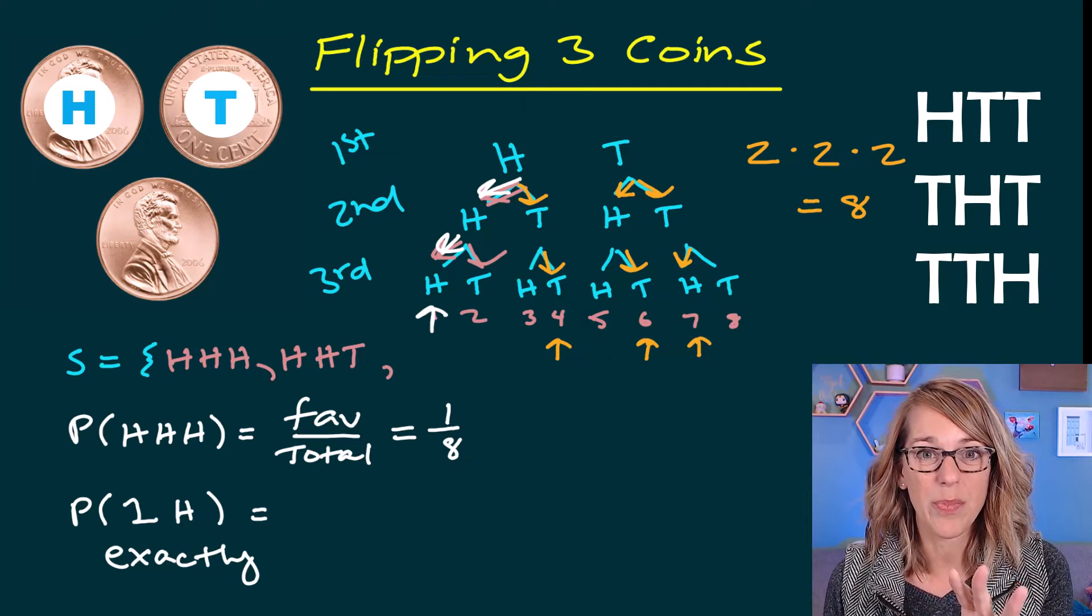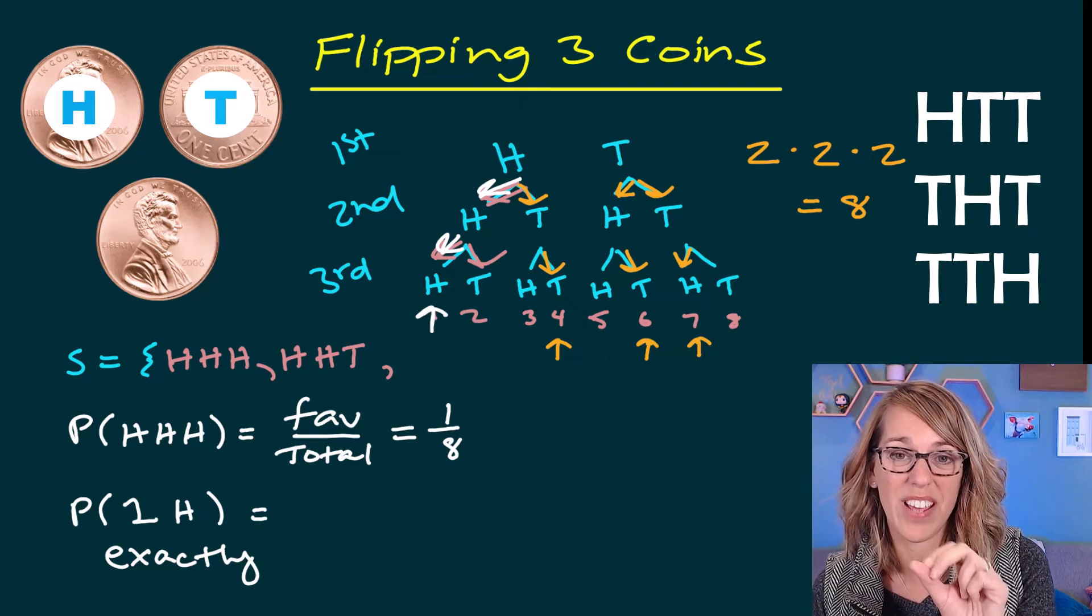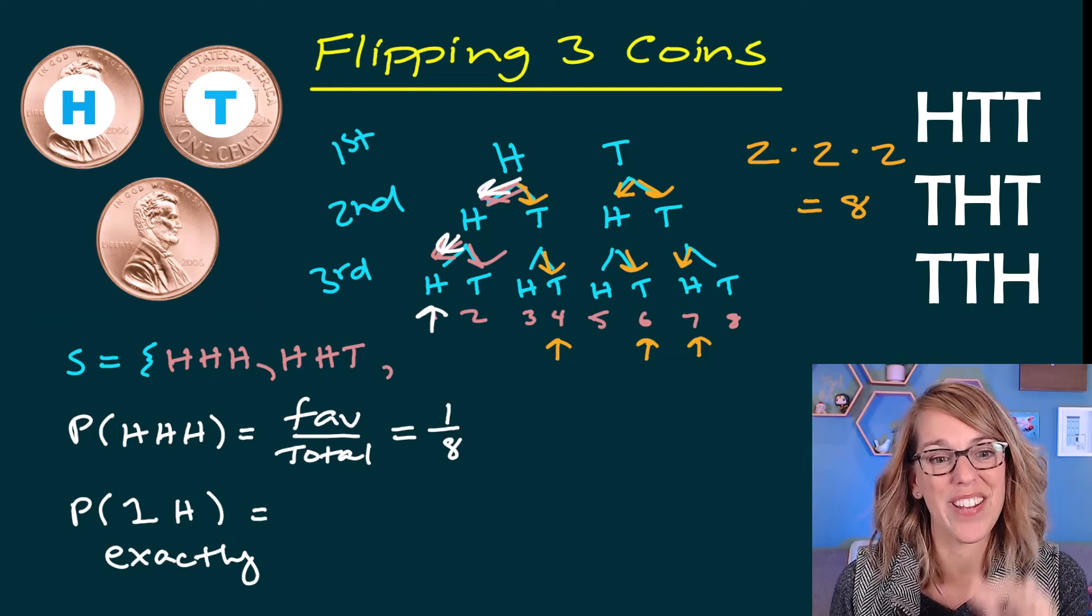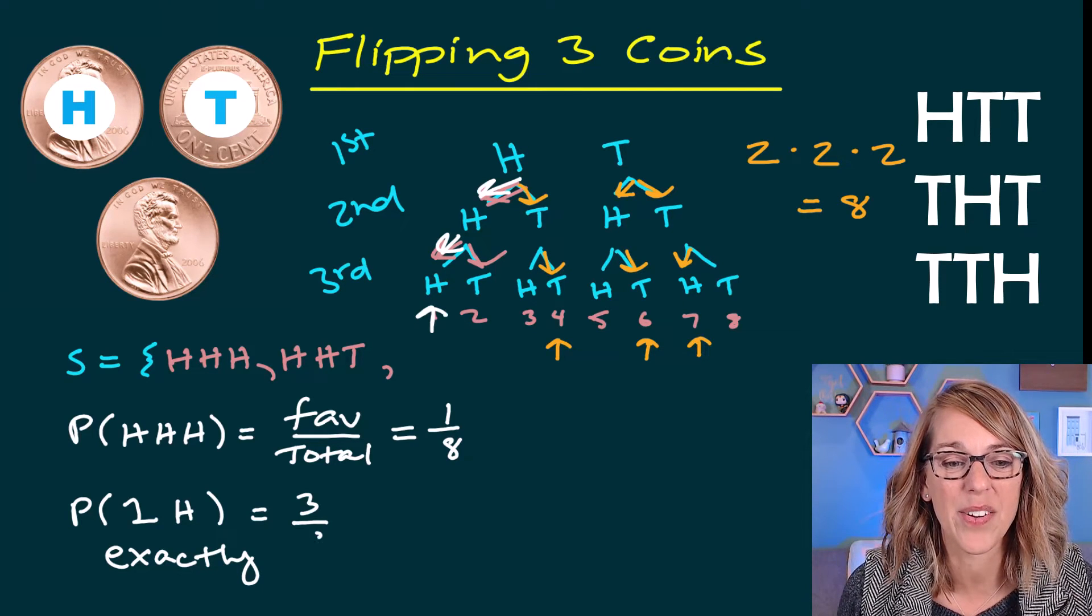You could also think this one through as having, I can only have heads in the first one, other two tails, heads second, only heads third coin only. So that's going to give me three out of eight.